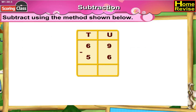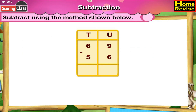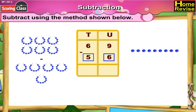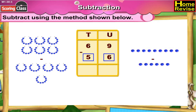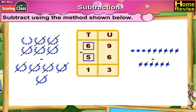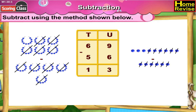69 minus 56. If you place them under tens and units, it is 6 tens 9 units minus 5 tens 6 units. 9 minus 6 is 3. 6 minus 5 is 1. So it is 1 ten 3 units, which means 69 minus 56 is 13.